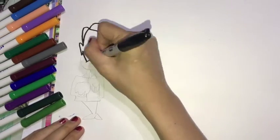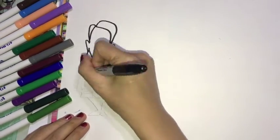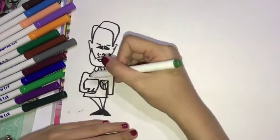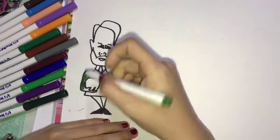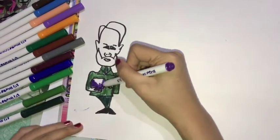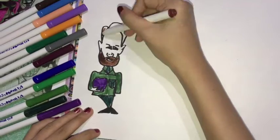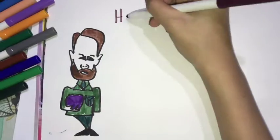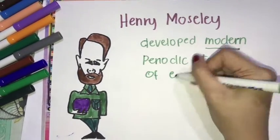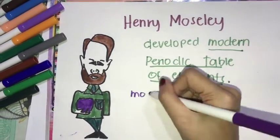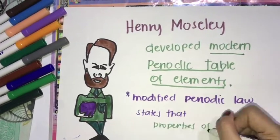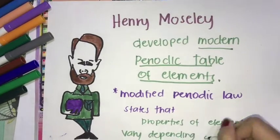Henry Moseley developed the modern periodic table. He also identified the atomic number of all the elements of the periodic table. He modified the periodic law, which states that the properties of the elements vary depending on their atomic number.